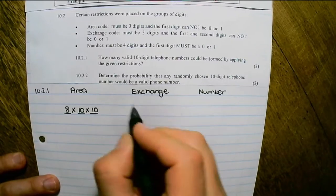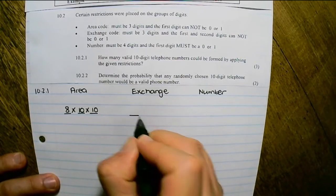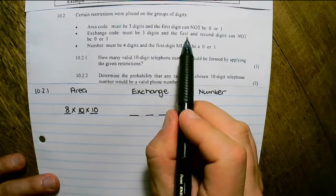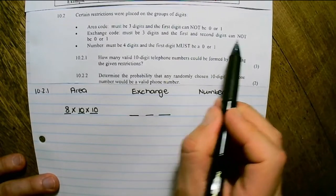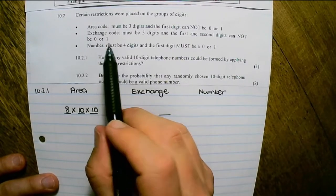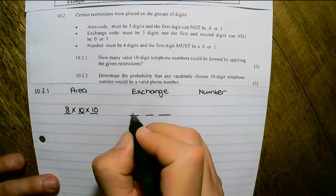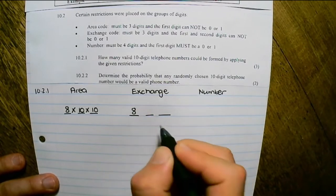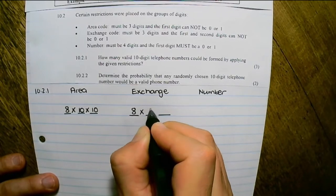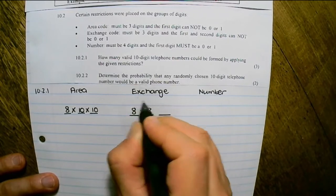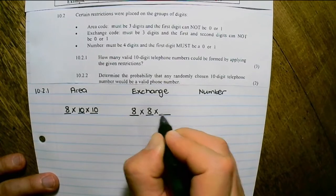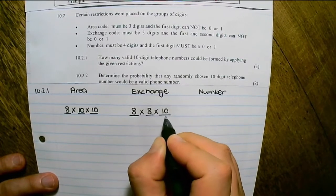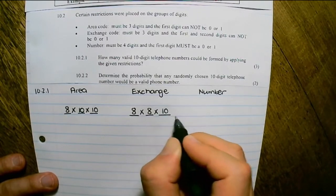For the exchange code, it must consist of 3 digits. The first and second digits cannot be 0 or 1, so there are 8 options left for each. For the third number, we have 10 possible values.